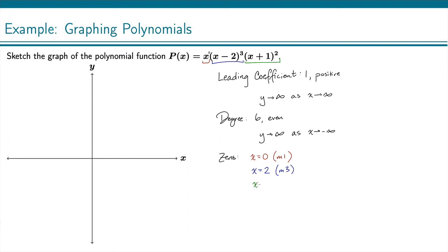And then finally here, if I set that equal to 0, I get x equals negative 1. And that has a multiplicity of 2, because the exponent on that factor is 2.